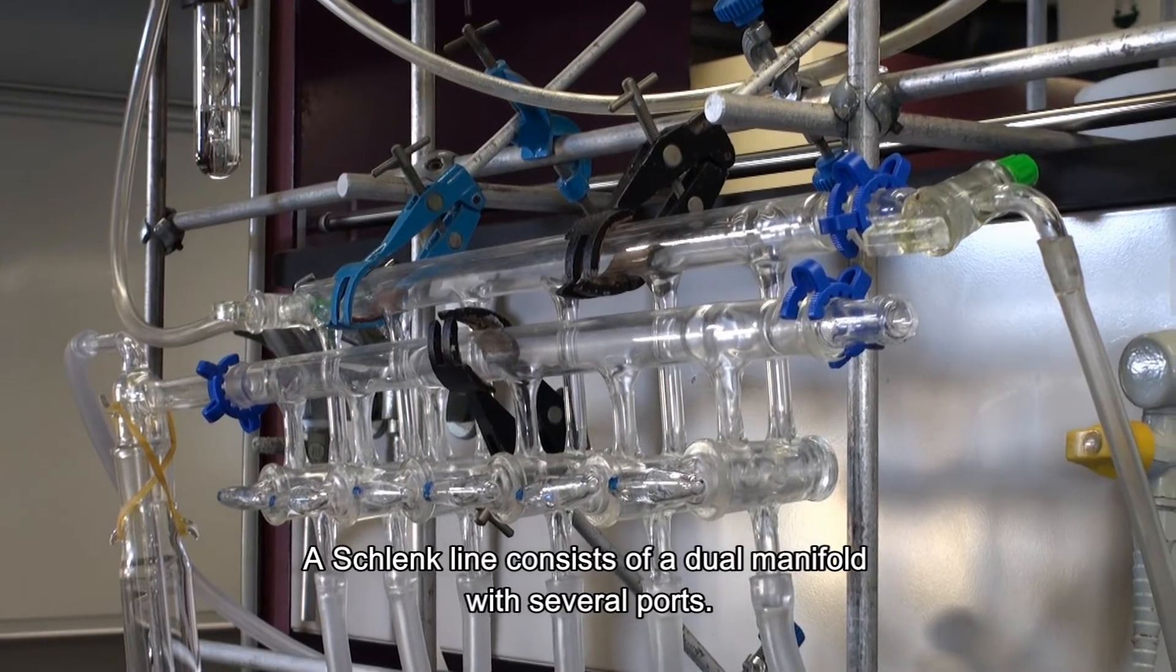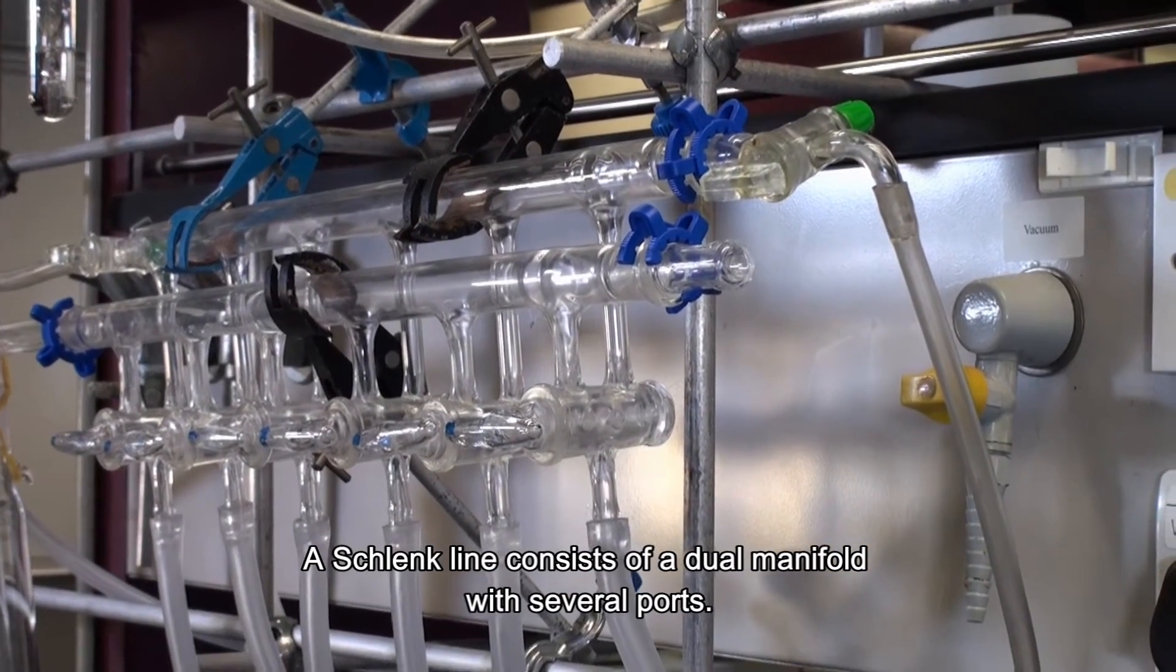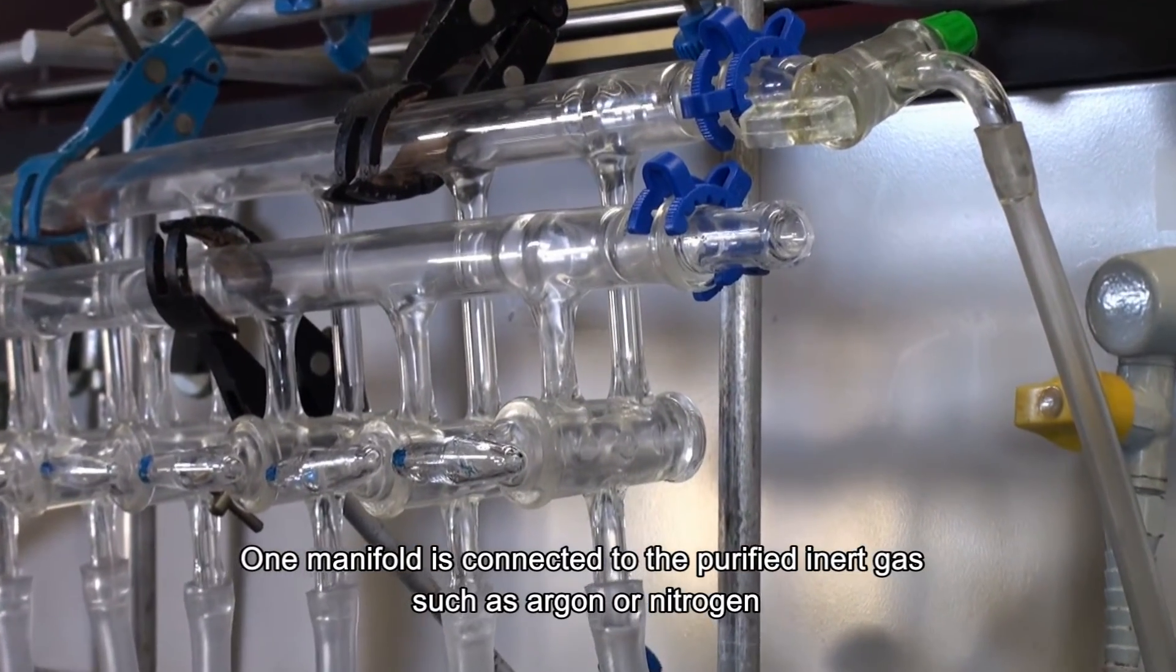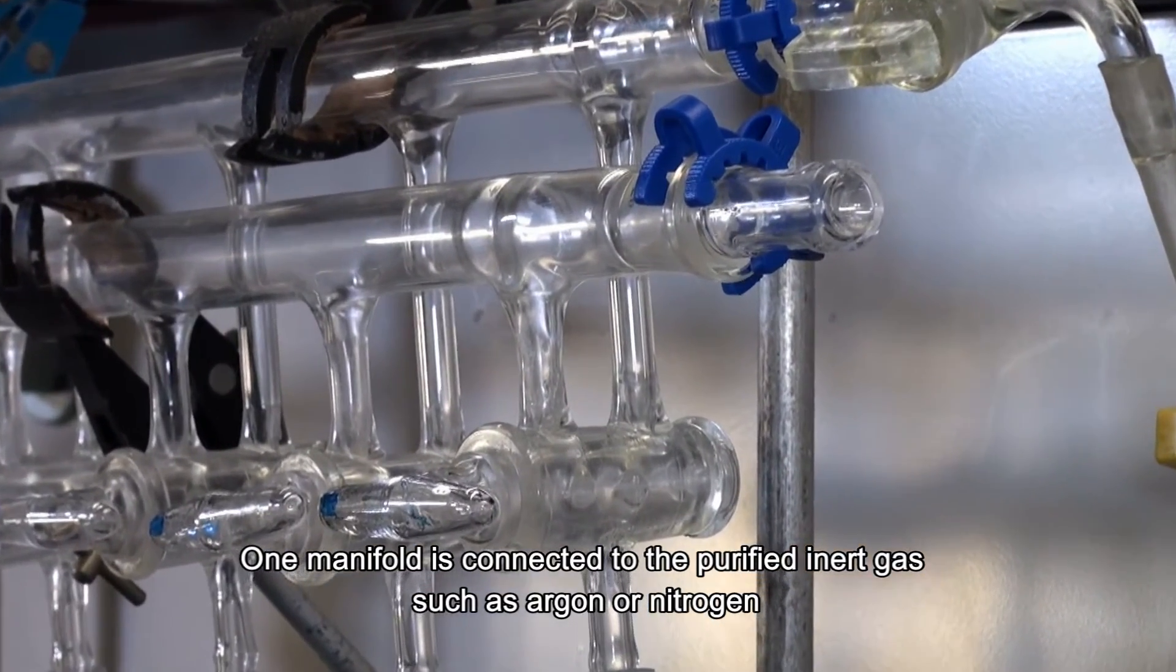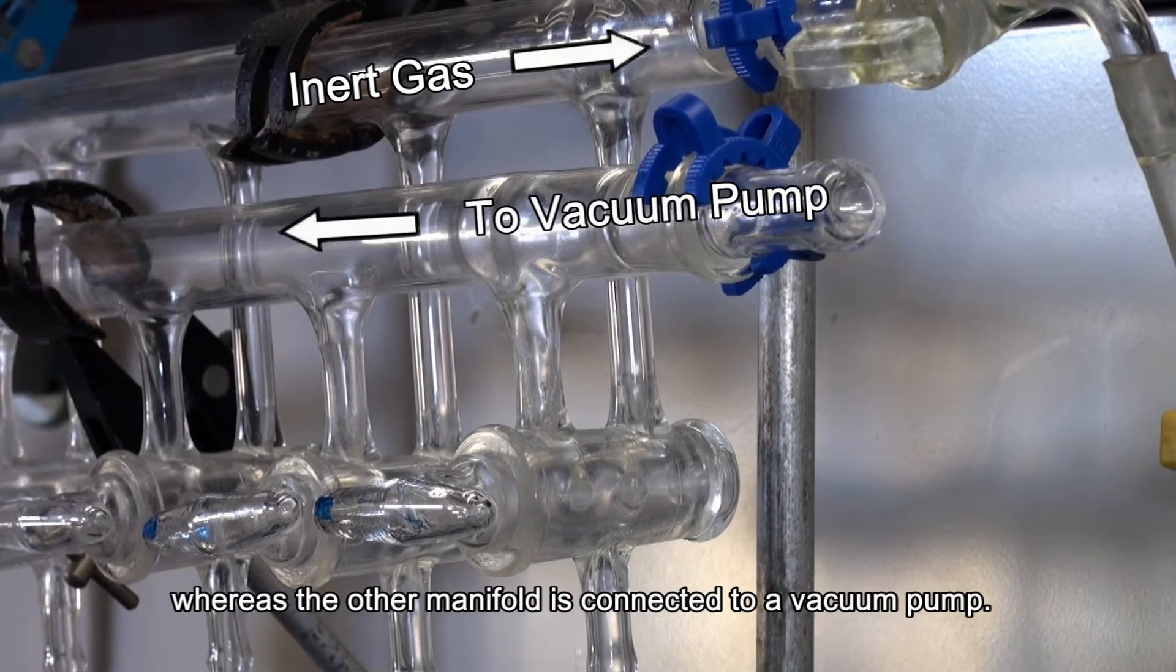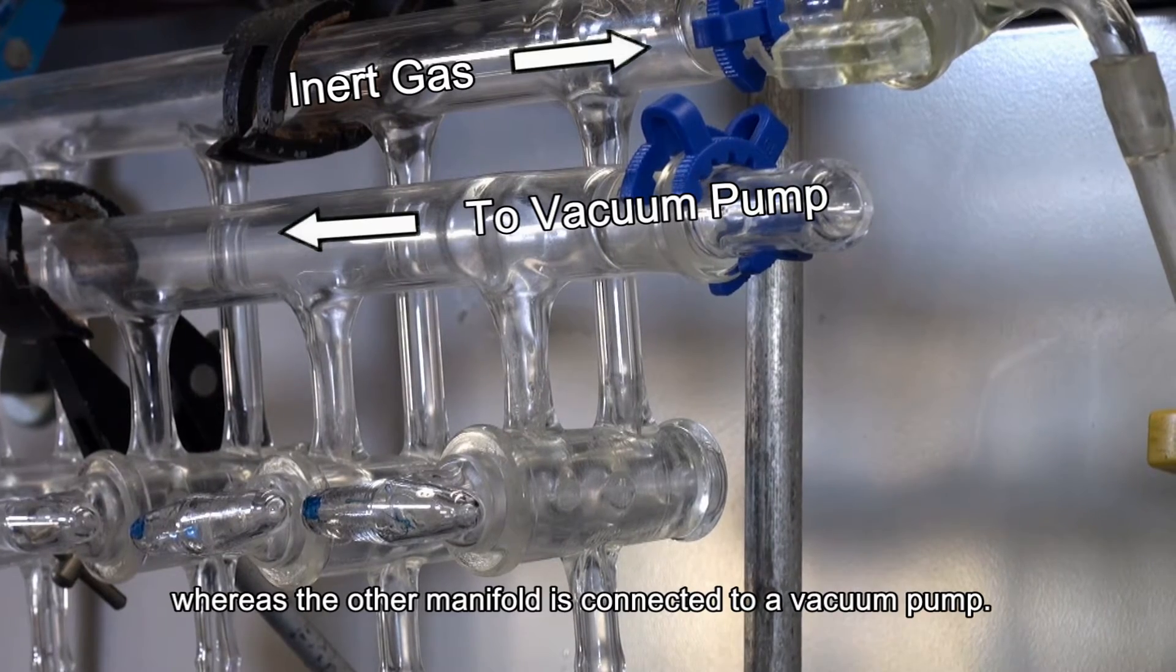A Schlenk line consists of a dual manifold with several ports. One manifold is connected to purified inert gas, such as argon or nitrogen, whereas the other manifold is connected to a vacuum pump.